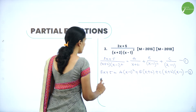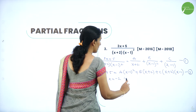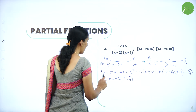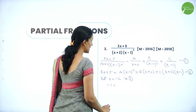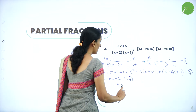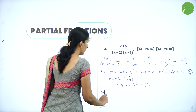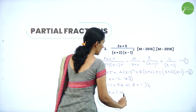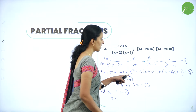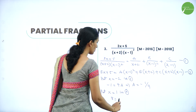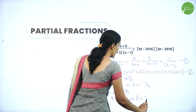We have two factors. Put x = −2 in equation 2: 3(−2)+5 = −1 = A(−2−1)² = A(9). So A = −1/9. Next, put x = 1 in equation 2: 3(1)+5 = 8 = B(1+2) = 3B. So B = 8/3.